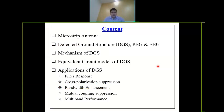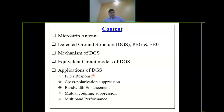Today we are going to discuss briefly about microstrip antennas, then what is the defective ground structure (DGS), differentiation of DGS with PBG and EBG structures, the mechanism of DGS, the equivalent circuit, and finally applications of DGS like filter response, cross-polarization suppression, bandwidth enhancement, mutual coupling suppression, and multi-band performance.